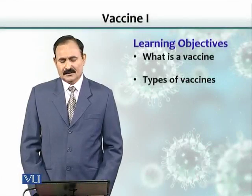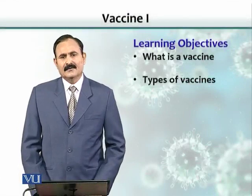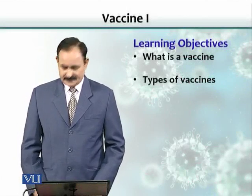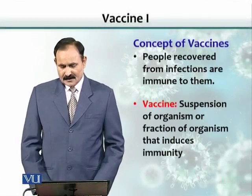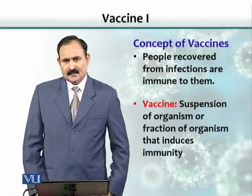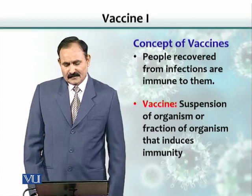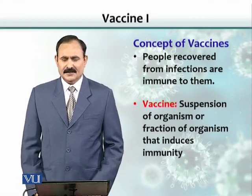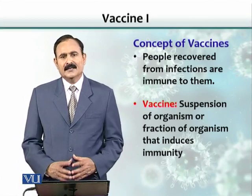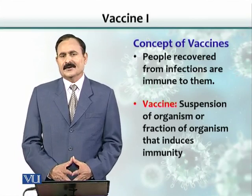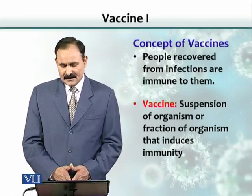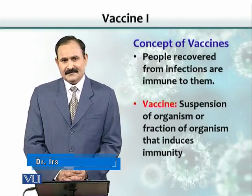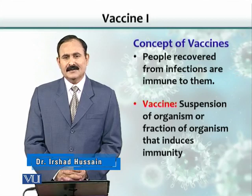Learning objectives include: what are vaccines, and what are the various types of vaccines? A vaccine is basically a suspension of organisms, or a part or fraction of an organism, that induces immunity. That is the definition of vaccine.